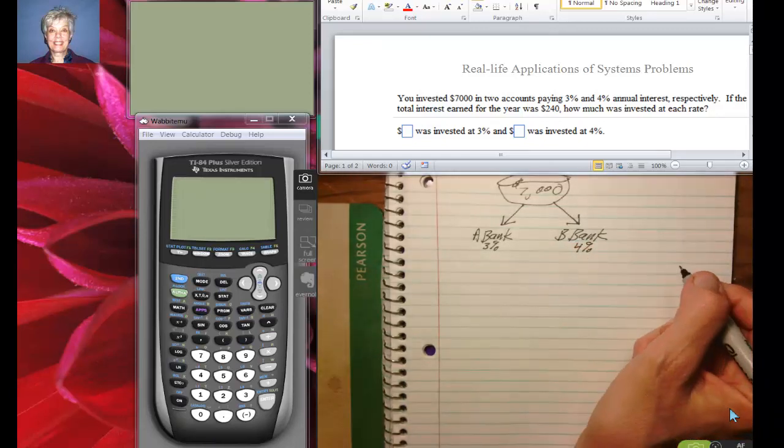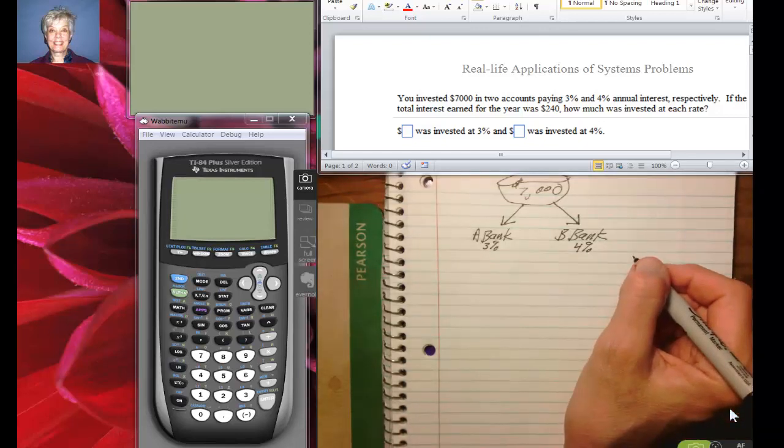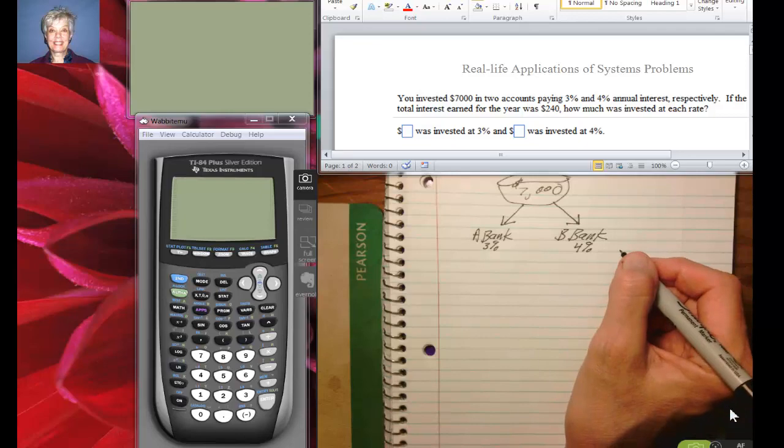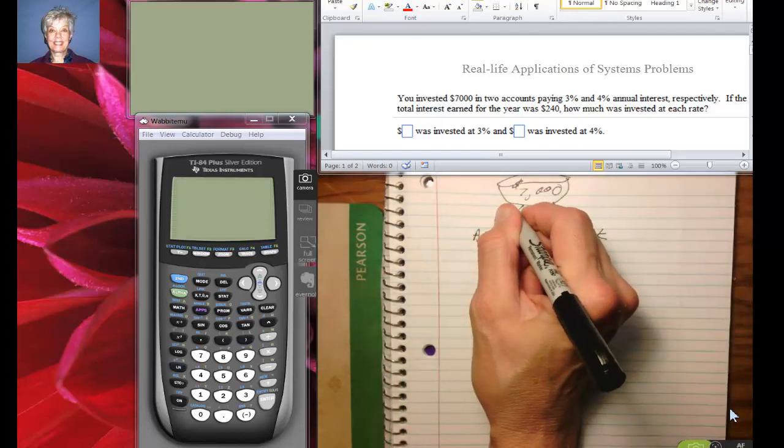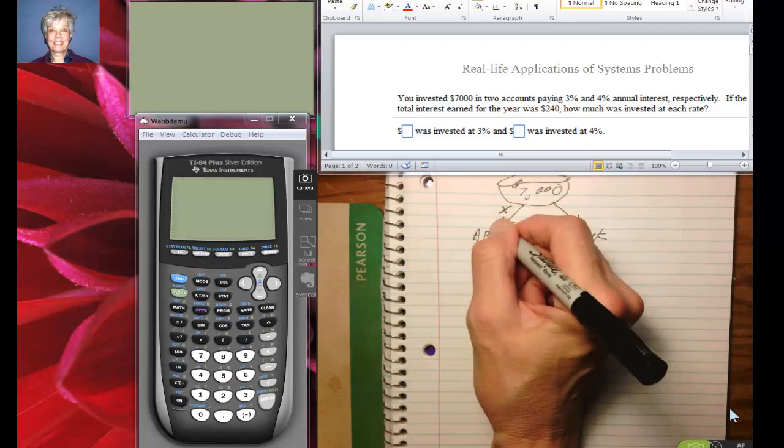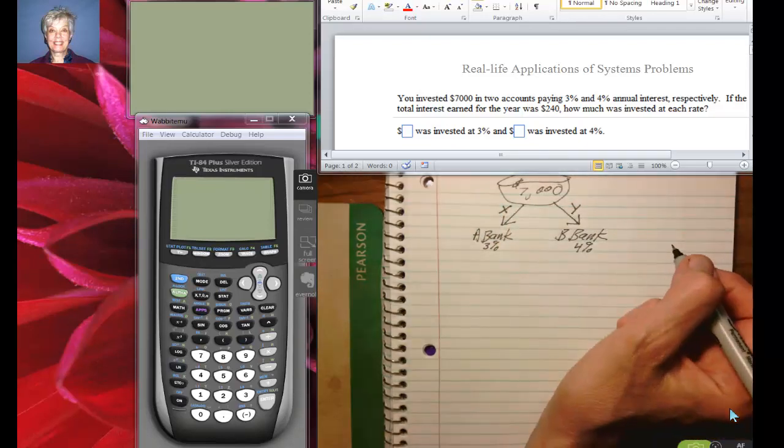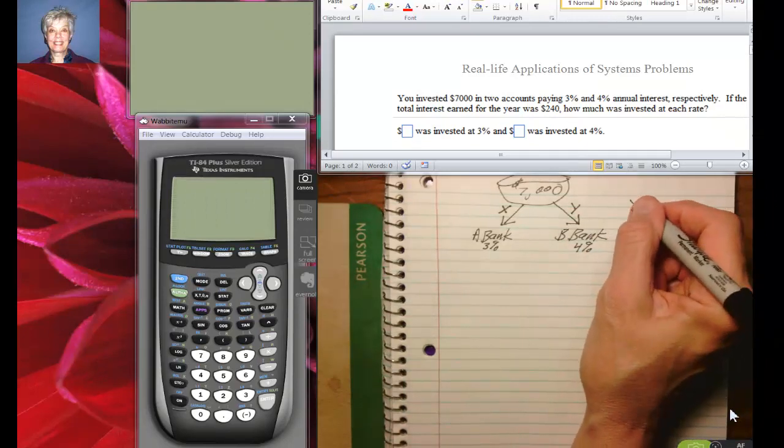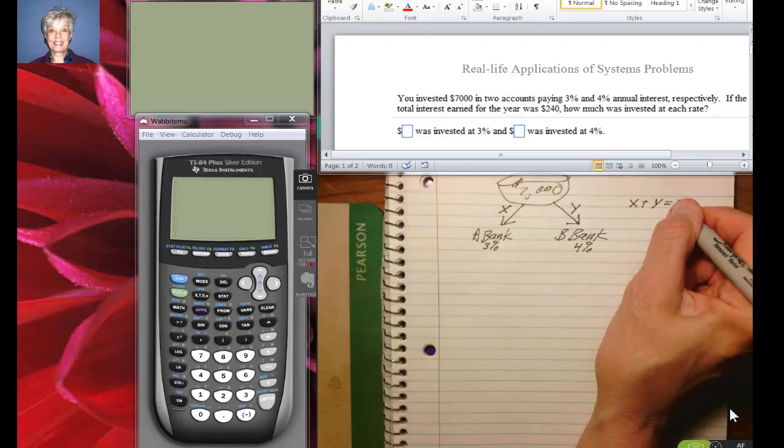So you say, hmm, I'm going to split up my money, but we don't have any idea how much and you want to find out what would be the best way for you. So we are going to let you put X dollars in here and Y dollars in here, with the understanding that X plus Y is going to equal $7,000.